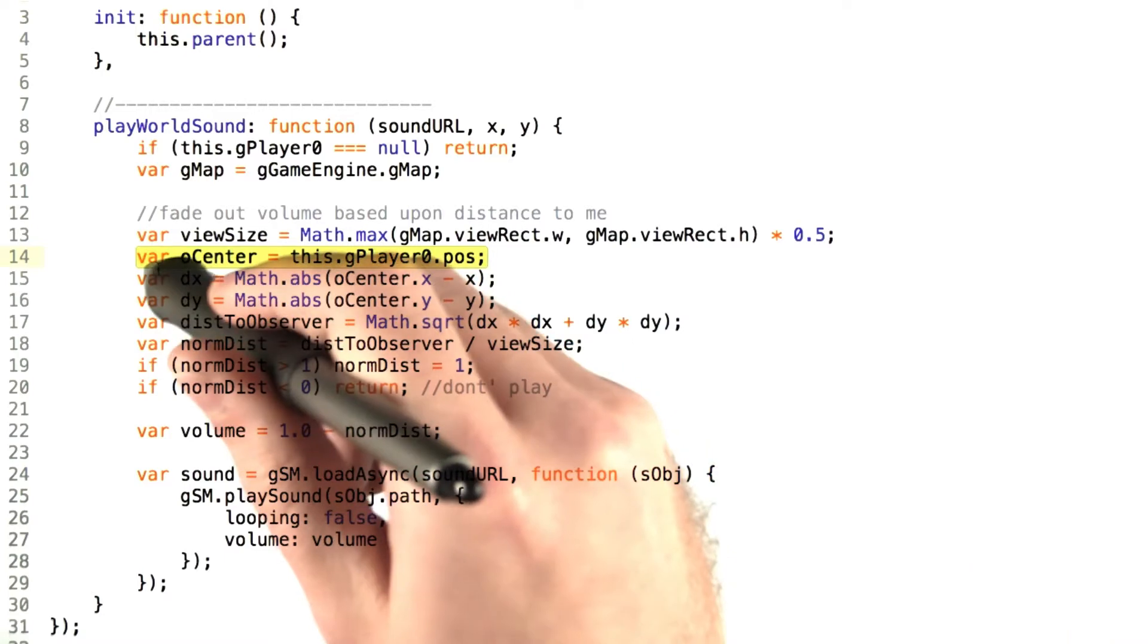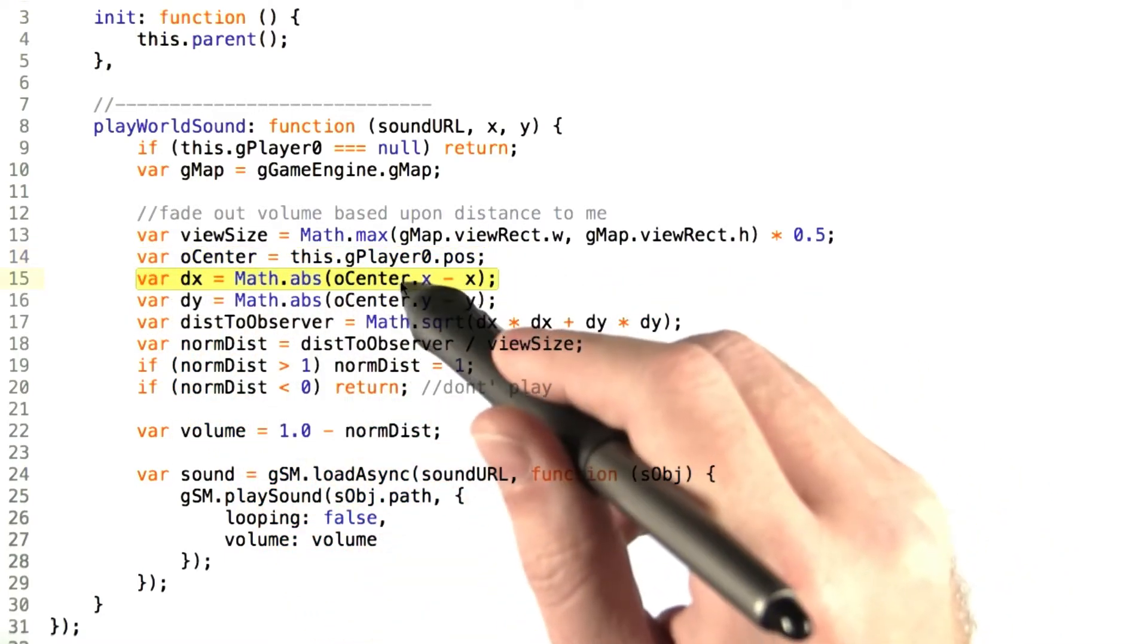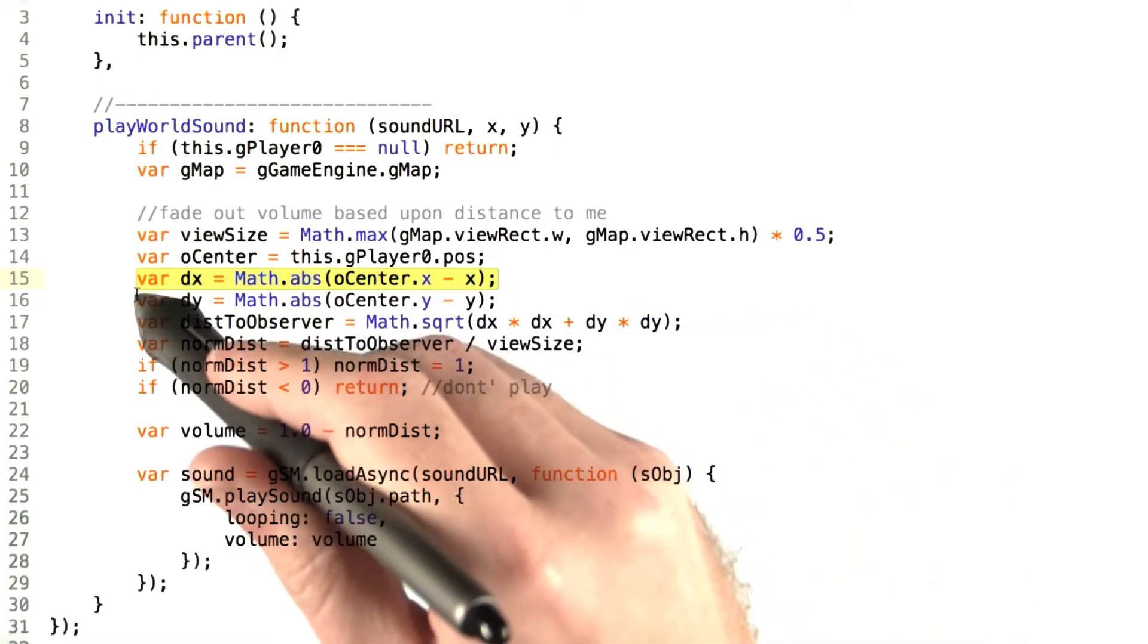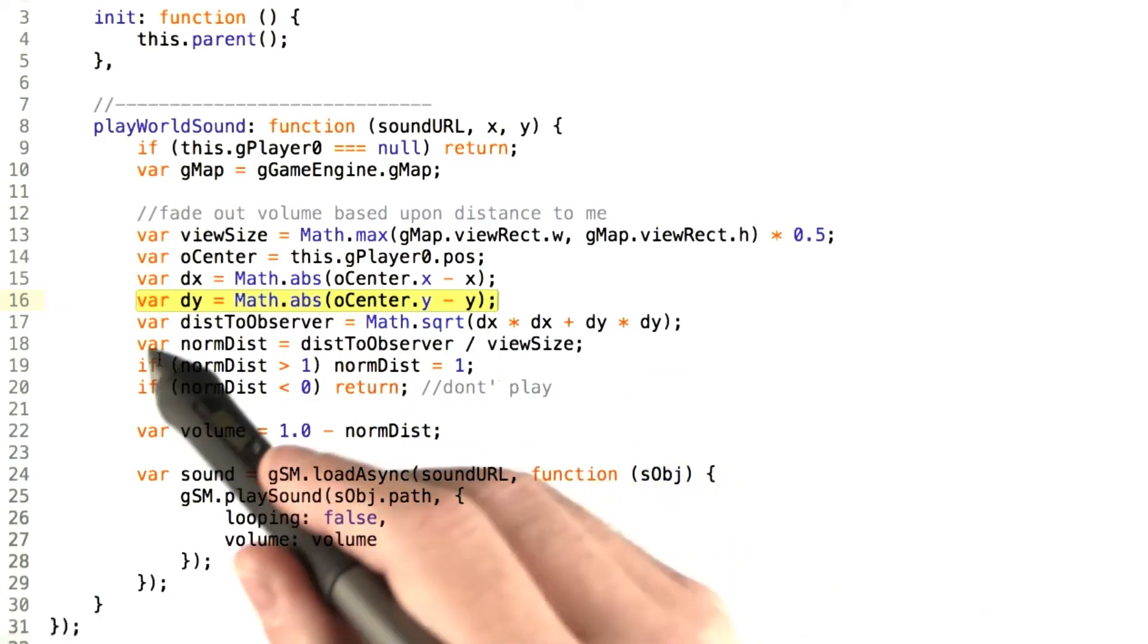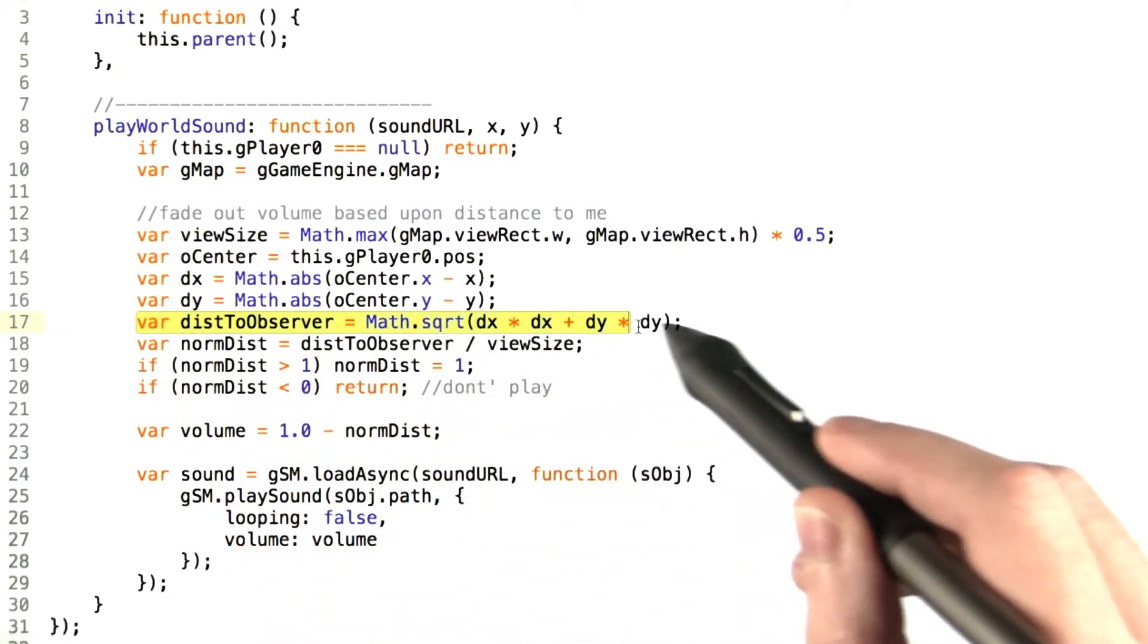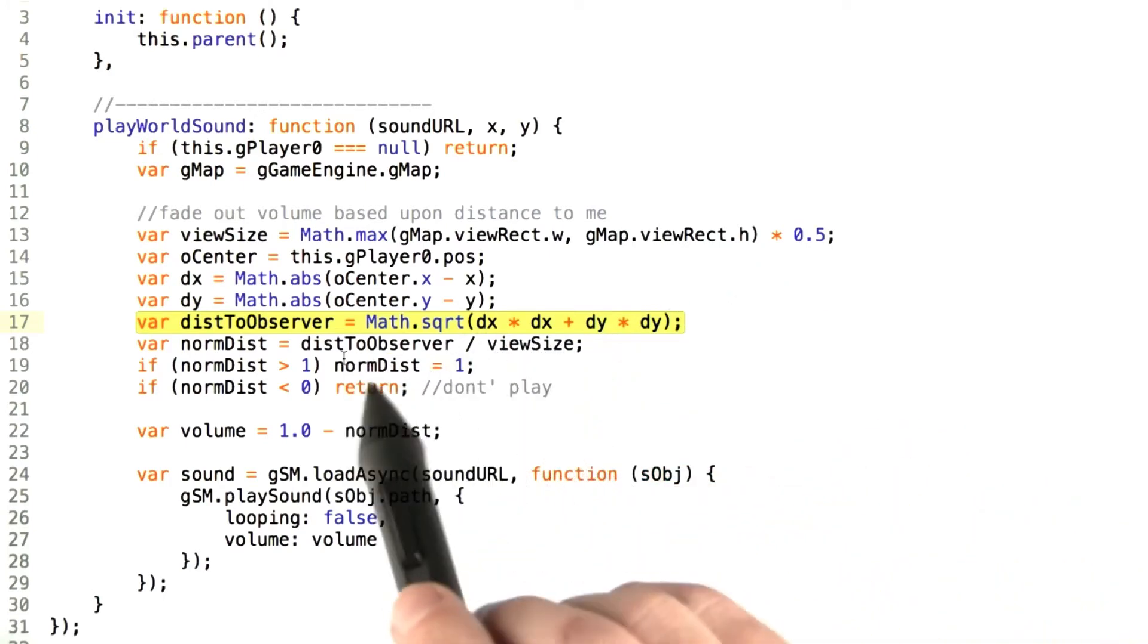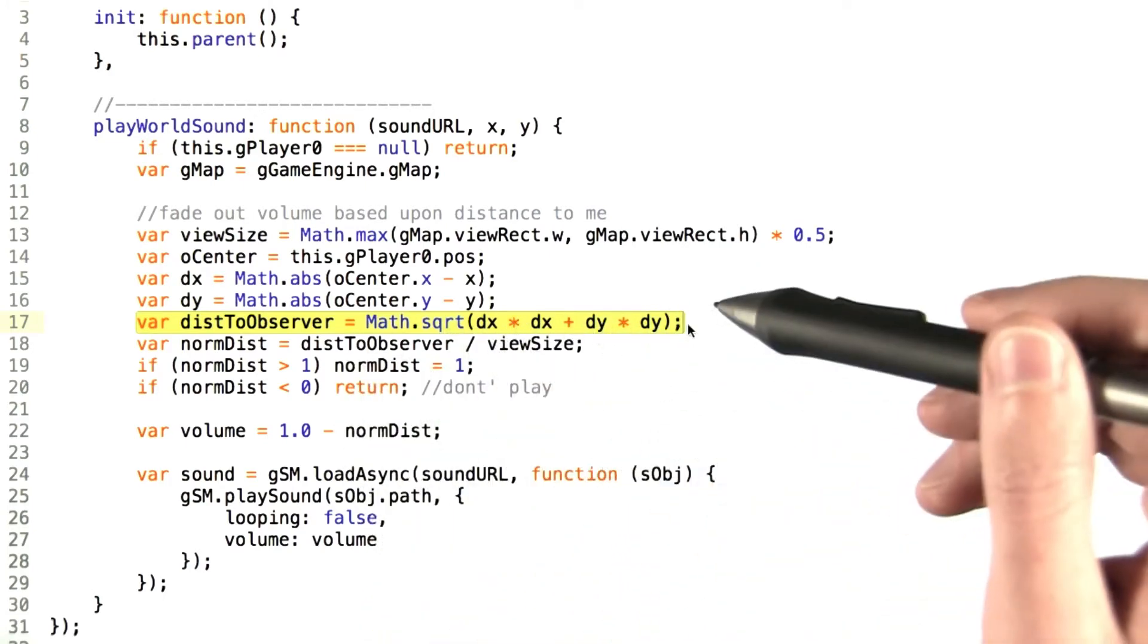Now we take the x value, the absolute x value, from the player's position to the sound's x position, and similarly for the y value. Then we compute the distance function, which is the same one you've probably learned in high school: the square root of the x distance squared plus the y distance squared.